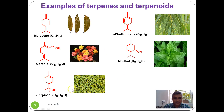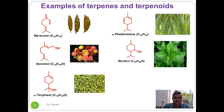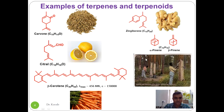These three examples — geraniol, menthol, and alpha-terpineol — contain oxygen in the form of alcohol functional groups: a primary alcohol, a secondary alcohol, and a tertiary alcohol respectively. Since they contain carbon, hydrogen and oxygen, they are called terpenoids.